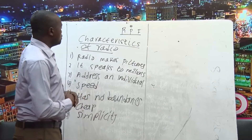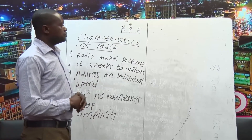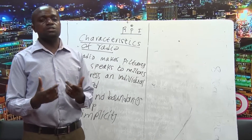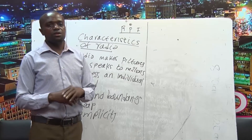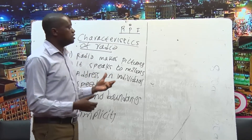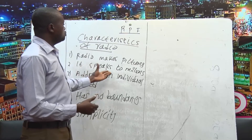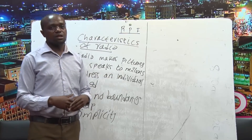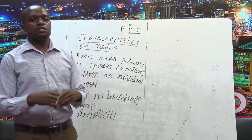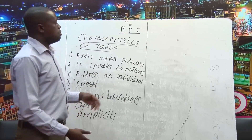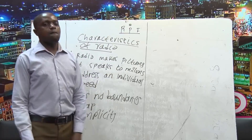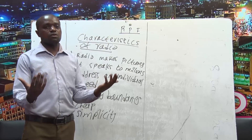The second characteristic of radio is that it speaks to millions. If you have a very high frequency of your radio transmission, you are able to reach a wider audience at the same time. And depending on the current generation, whereby you are living in the digital world, many people are using digital medium as a form of communication in terms of radio. You can open up your online radio station and be able to reach many people across the globe. That's why we say that radio speaks to millions — many people can listen to radio at the same time.